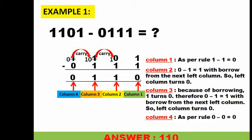As per the rules, every column has been explained. Column 1 is 1 minus 1, which equals 0. Now go to the second column from the right, where you have 0 minus 1. As per the rule, in the answer row you write 1, and you borrow from the left column, so the left column turns to 0.